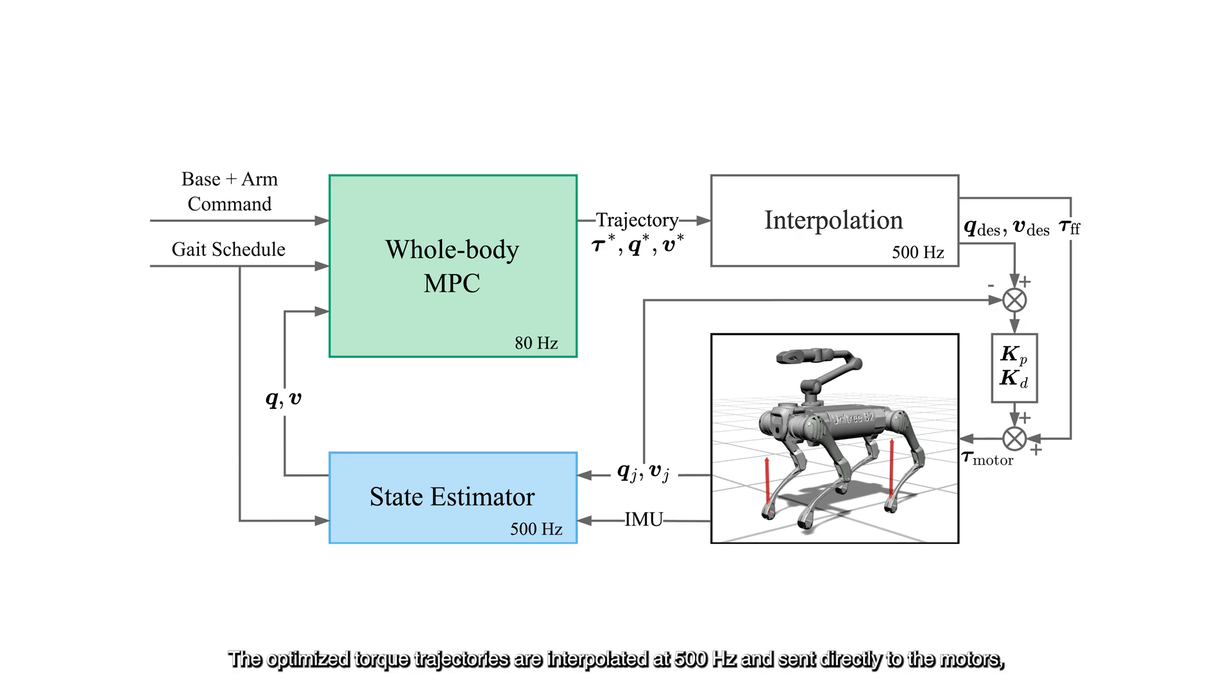The optimized torque trajectories are interpolated at 500 Hz and sent directly to the motors with additional PD feedback on joint positions and velocities.